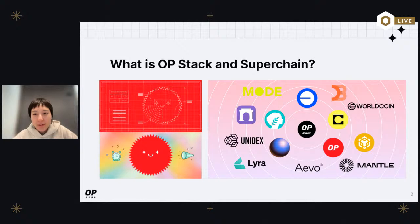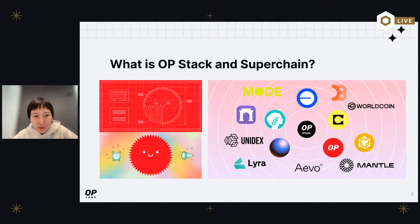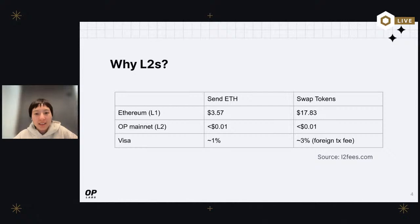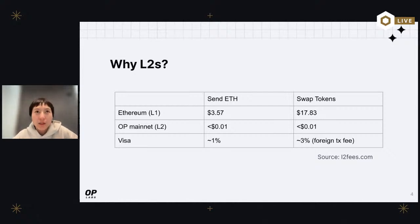First, it's important to understand why we need L2s in the first place. Right now, L1 fees are very expensive because of limited block space. We have limited block space because we need to bound compute on L1 such that validators can execute and validate all transactions within the 12-second block time, and also to make sure that transactions don't run forever.